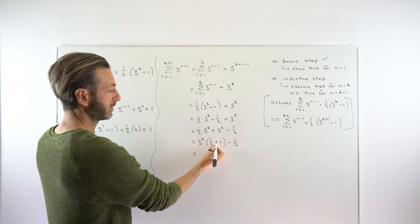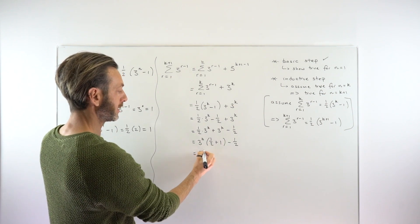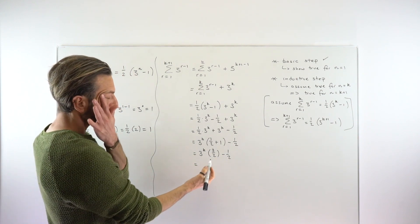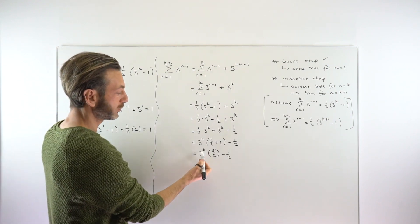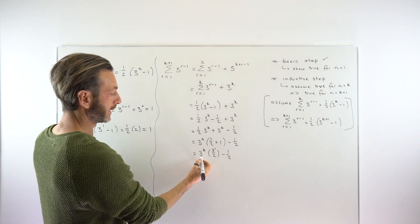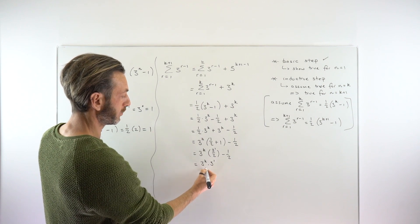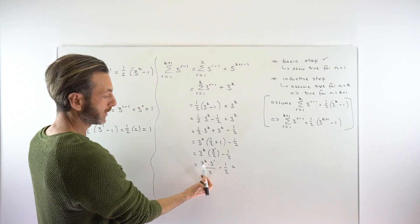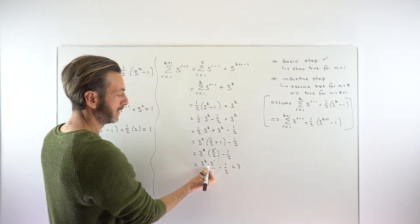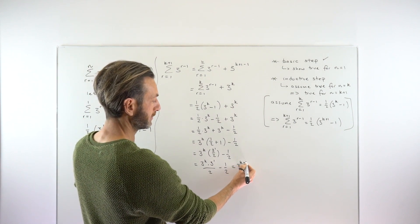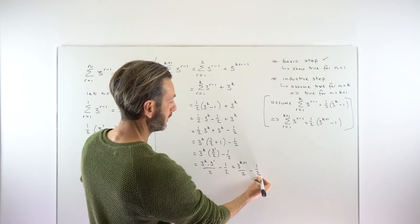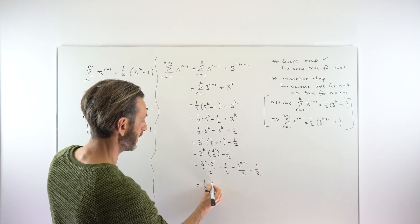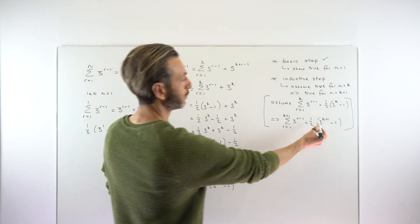The bracket one half plus 1 equals three halves, or 3 over 2. So this becomes 3 to the power of k times 3 over 2, minus one half. That 3 in the numerator is 3 to the power of 1, so multiplying gives 3 to the power of k times 3 to the power of 1, all over 2. By exponent rules — adding powers when multiplying — that becomes 3 to the power of k plus 1, all over 2, minus 1 over 2. Factoring out the common one half gives us one half times (3 to the power of k plus 1 minus 1), which is exactly what we were trying to show.